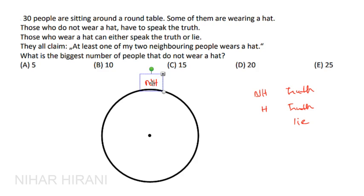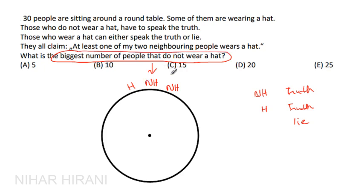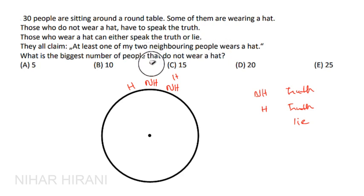So I will place a person not wearing a hat here and put a person wearing a hat next to them. In that case, this person is telling the truth — at least one neighbor is wearing a hat. Since we want the biggest number of people not wearing a hat, I will arrange one person wearing a hat and one person not wearing a hat as neighbors.